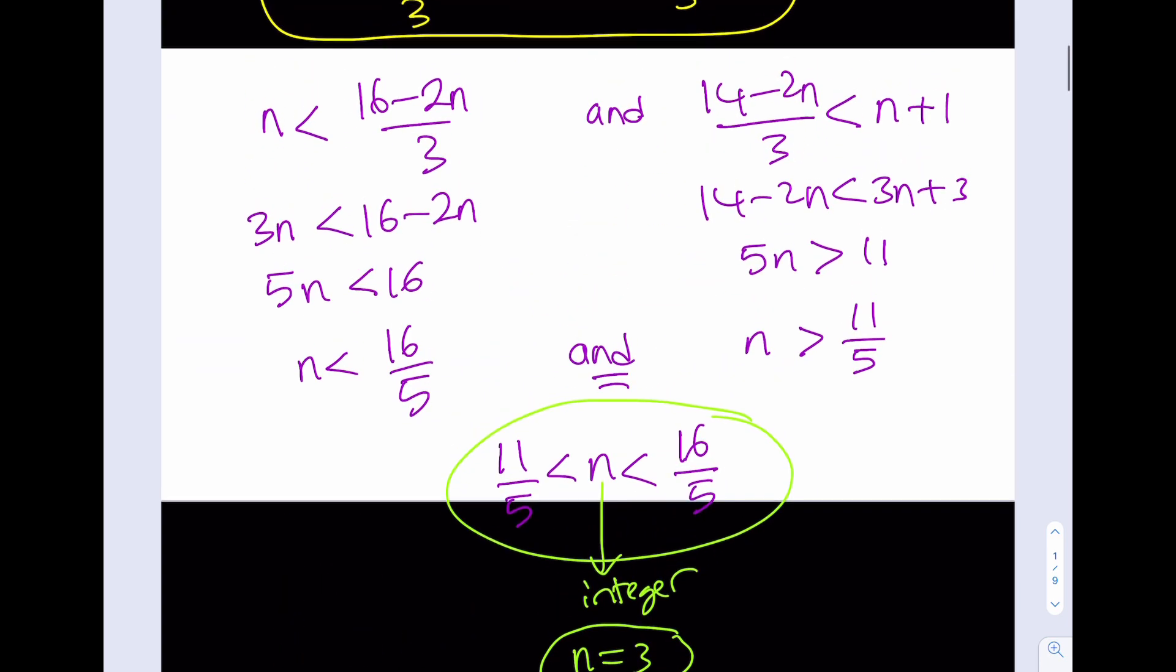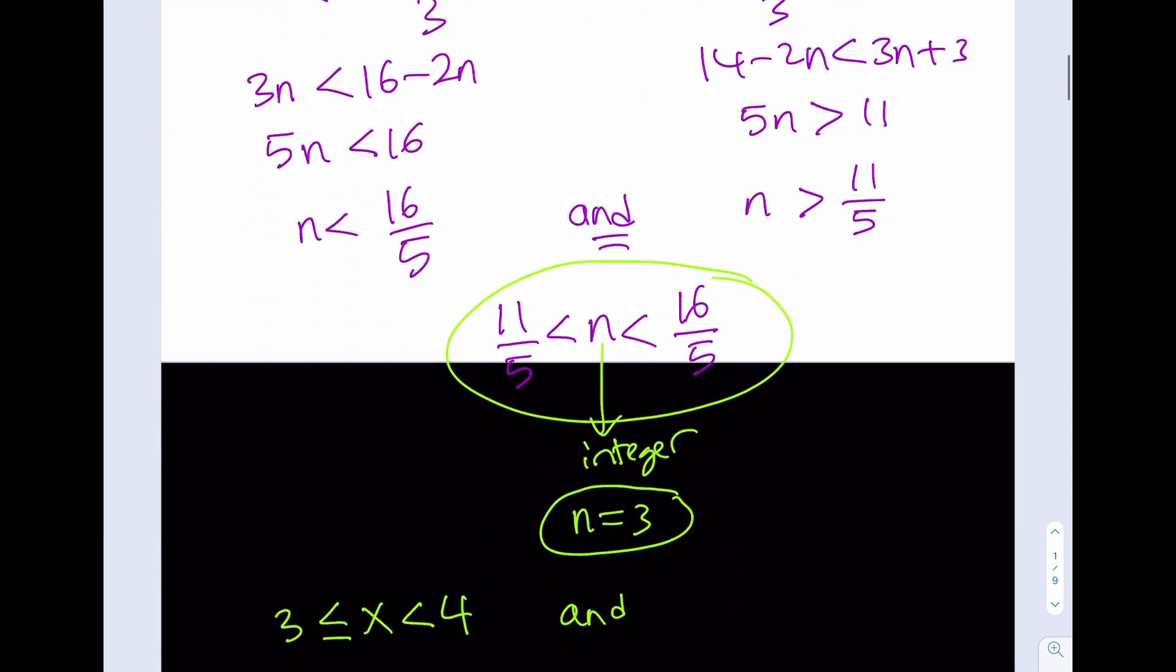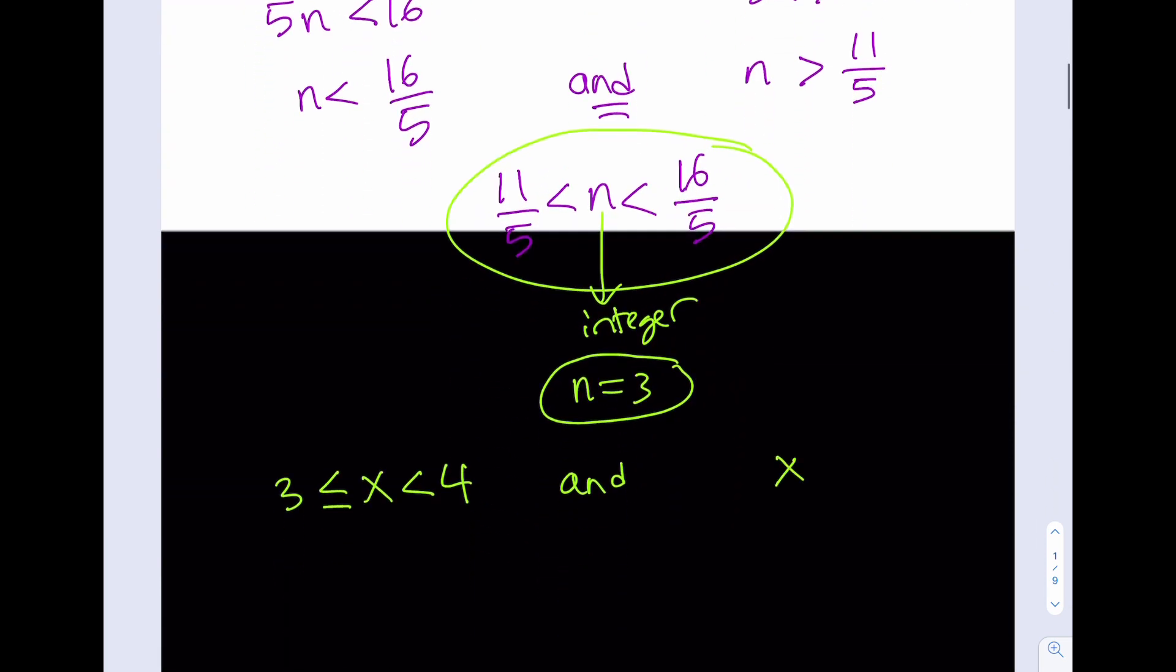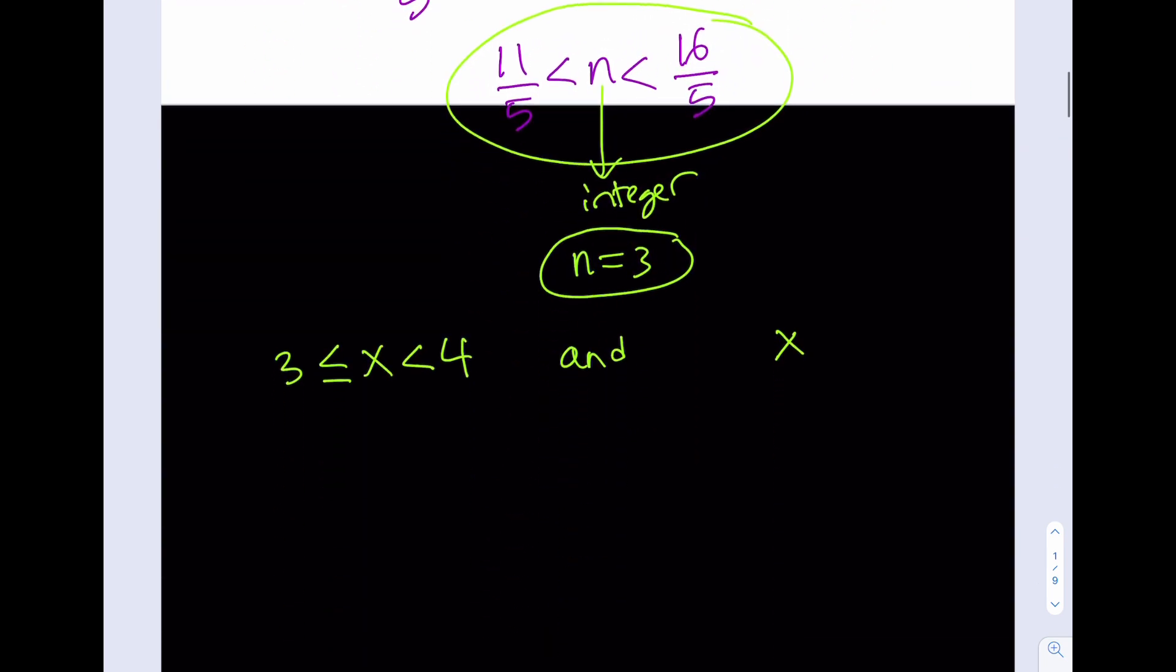And the second one gives me what? Okay, the second one gives me this. So both of them have to happen. We know that both have to happen. So from here, I can get x between 14 minus 2n. So it's going to look like this. 14 minus 2n over 3. And for that, I'll use n equals 3. So that will be 14 minus 6, which is 8 thirds.